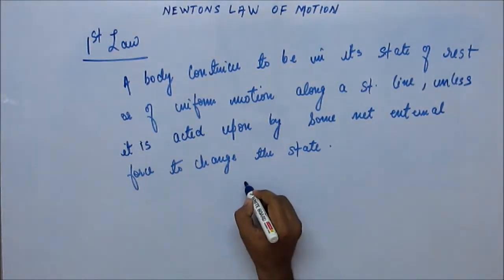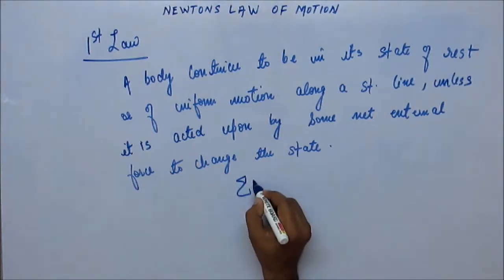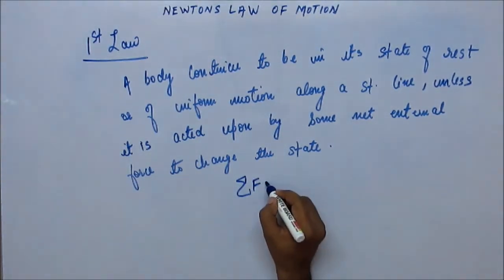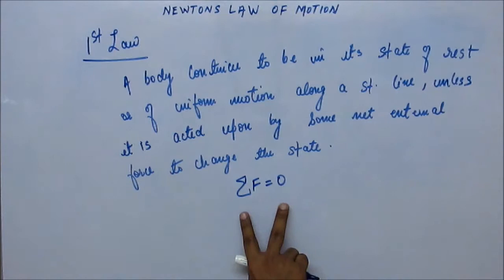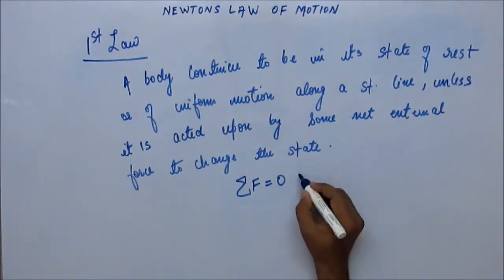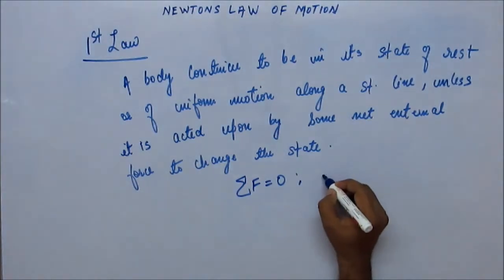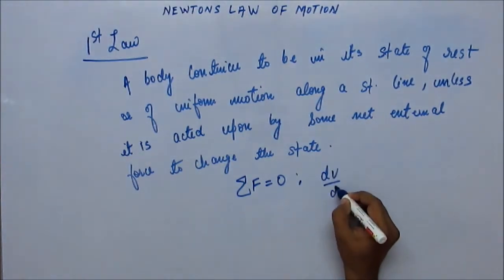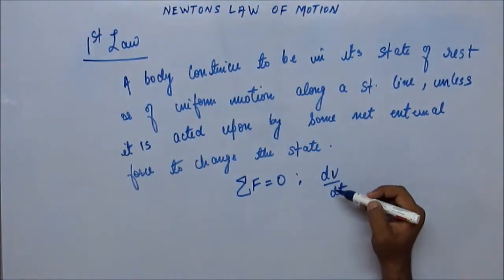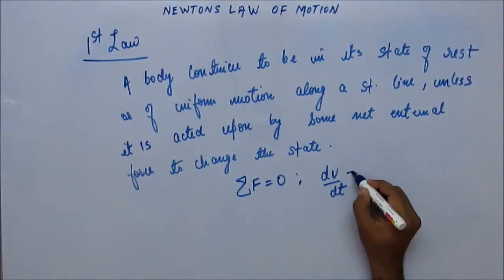That means mathematically, if you see, this is the symbol for summation, sigma. Sigma F is equal to 0, meaning the sum of all the forces acting on the block is 0. If this is the case, then dV by dt, you would understand what it is, dV by dt is change in velocity with respect to time is 0.